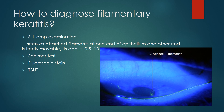Go through the slit lamp examination, Schirmer test, and fluorescein staining. In slit lamp examination, you will see the filaments attached at one end to the epithelium, with the other end freely movable. The filament size is about 0.5 to 10 mm.